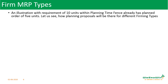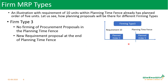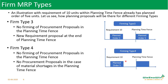Continuing with the same illustration: in firm type 3, there is no firming done, but a new requirement is generated after the planning time fence. In firm type 4, firming is also not done and no new requirement is generated either. So these are the behaviors of firm types 1, 2, 3, and 4. Use the different MRP types, understand how they behave, and apply them to your business accordingly. This is very useful when continuous changes are occurring and people are seeing unexpected daily variations in proposals.